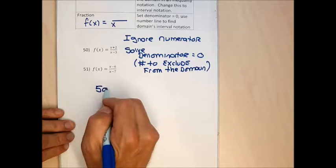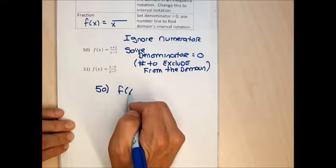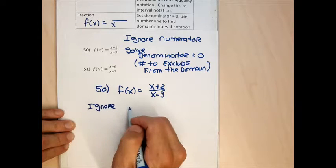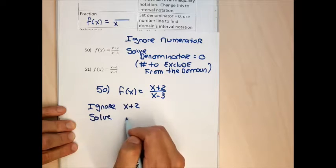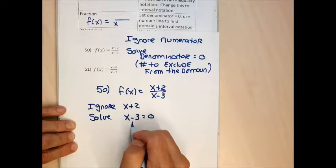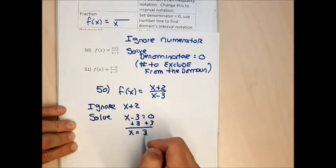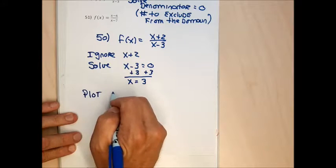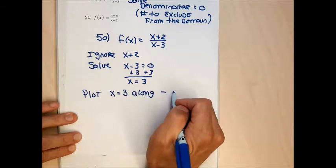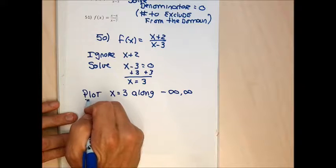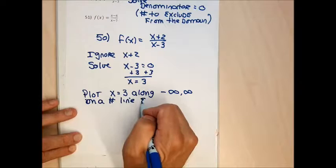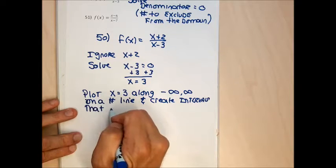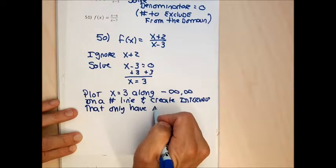For problem 50, to find the domain of f(x) = (x+2)/(x-3), I ignore the x+2 and solve x-3 = 0, giving x = 3 — the number to exclude from the domain. I plot 3 along with negative and positive infinity on a number line and create intervals using only round parentheses, since excluded values always get round brackets in fraction domains.